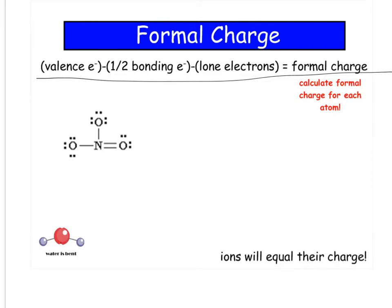So nitrogen has five valence electrons, minus half of the bonding electrons, and each line represents two electrons. So there's two, four, six, eight here, but half of that is four, minus lone electrons. It has no lone pairs around it, so zero. So five minus four is one.